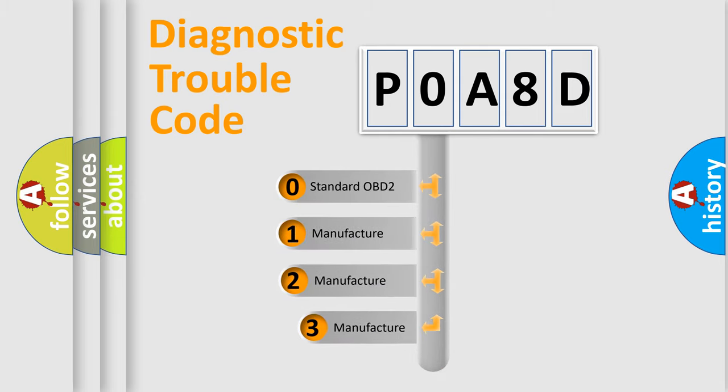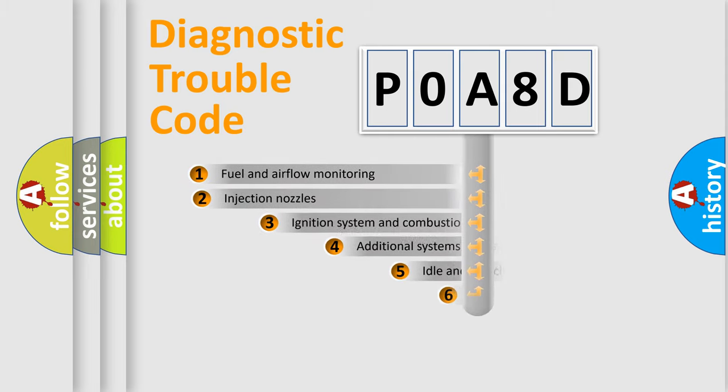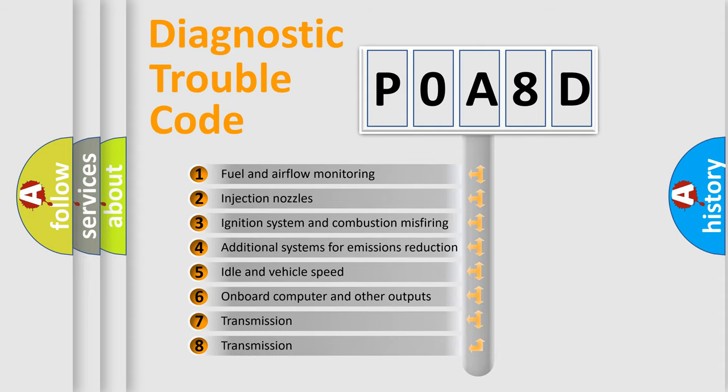If the second character is expressed as zero, it is a standardized error. In the case of numbers 1, 2, or 3, it is a manufacturer-specific error. The third character specifies a subset of errors.